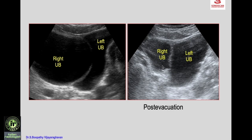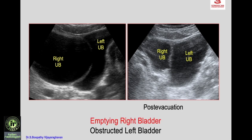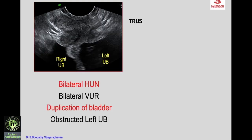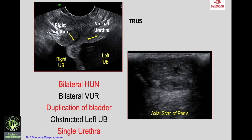After the patient voids, the right urinary bladder empties well, whereas the left urinary bladder has not emptied and appears larger, indicating obstruction. There is duplication of the bladder with an obstructed left bladder. Transrectal ultrasound shows the right urinary bladder continues as the urethra, whereas the left urinary bladder has no communication with the urethra.